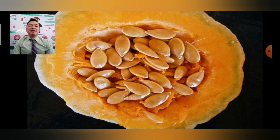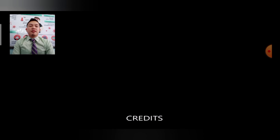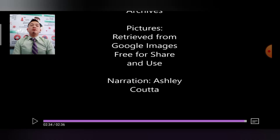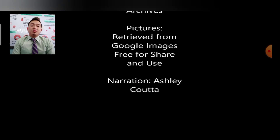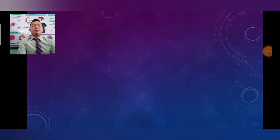After pollination has occurred, the flowers will transform into fruiting bodies which contain seeds that will start the plant life cycle over again, beginning with the seed stage. The life cycle of plants always starts with the flower and then turns into a seed.